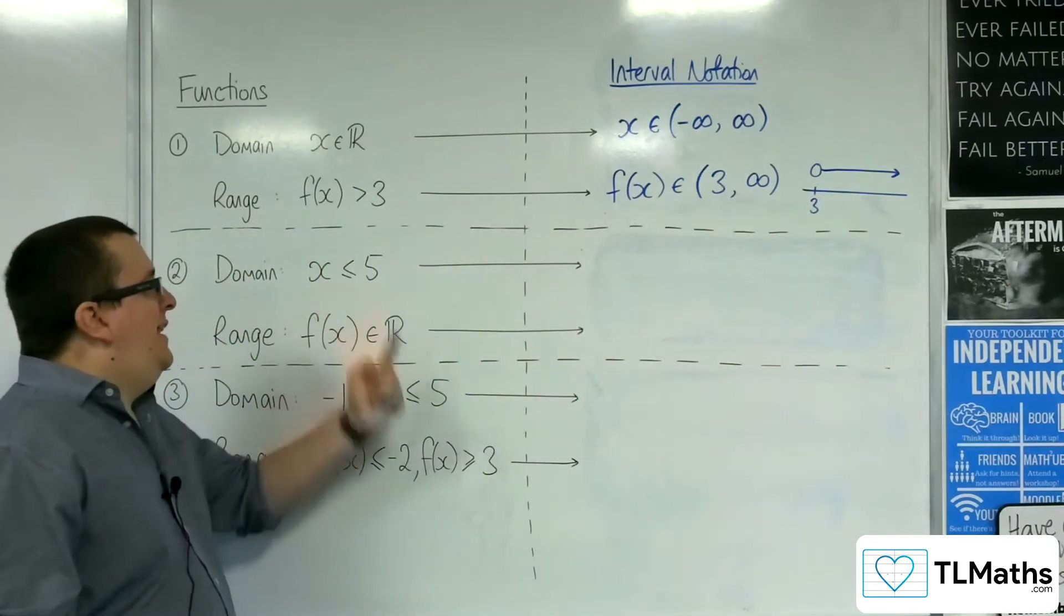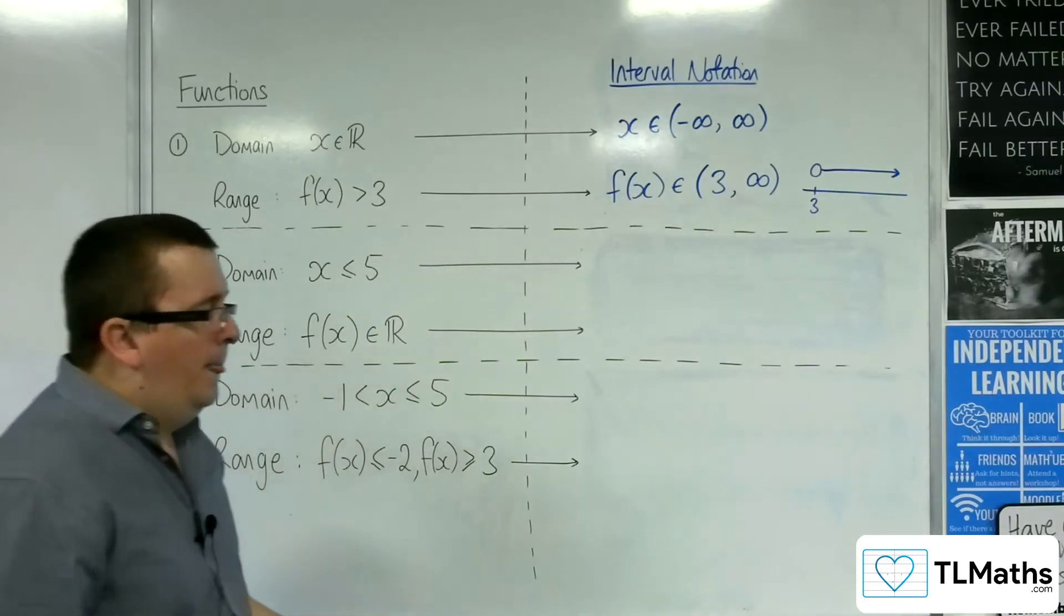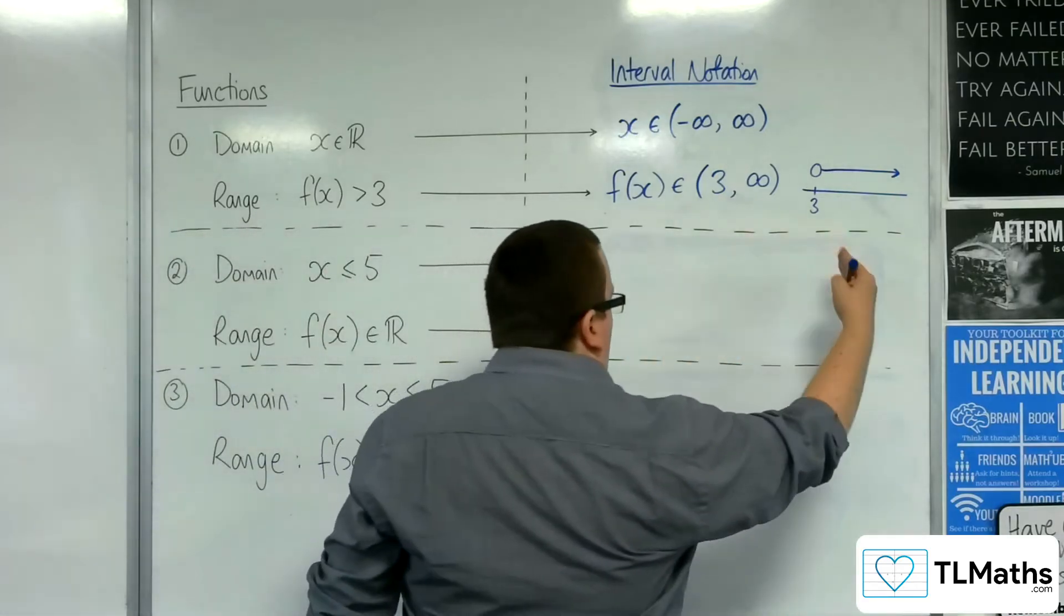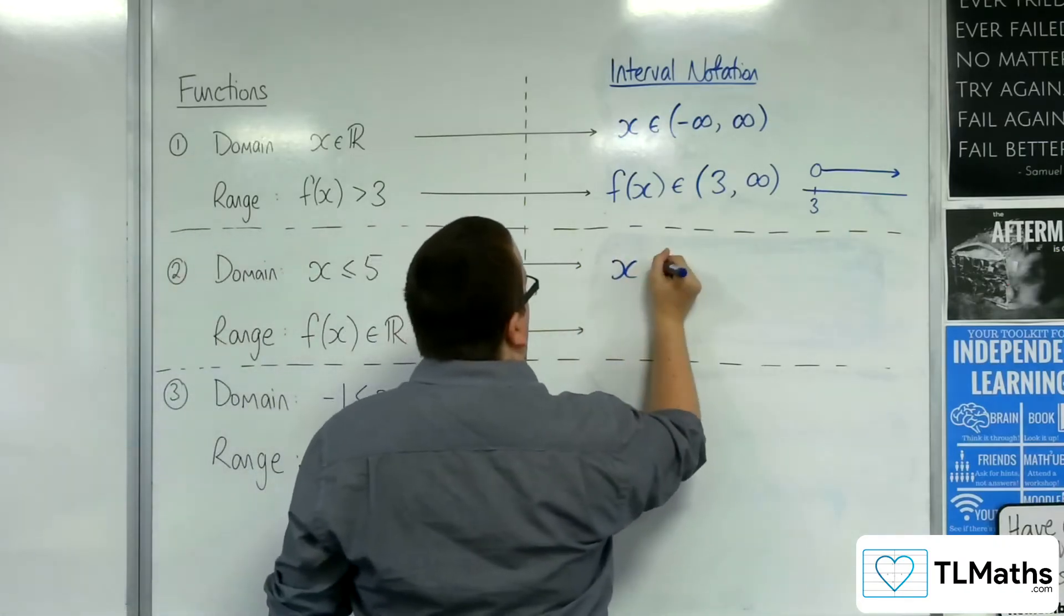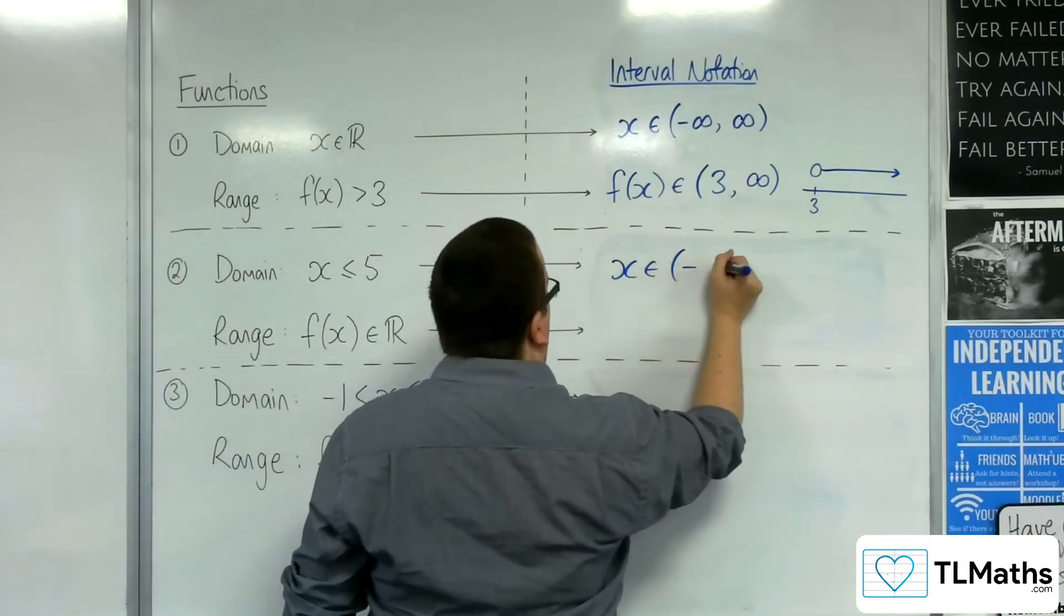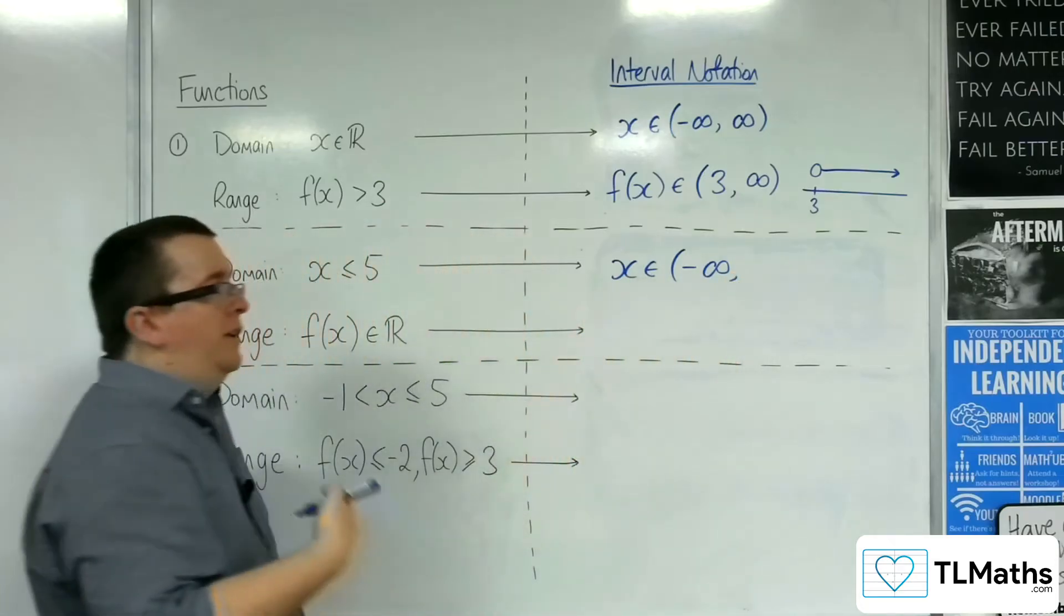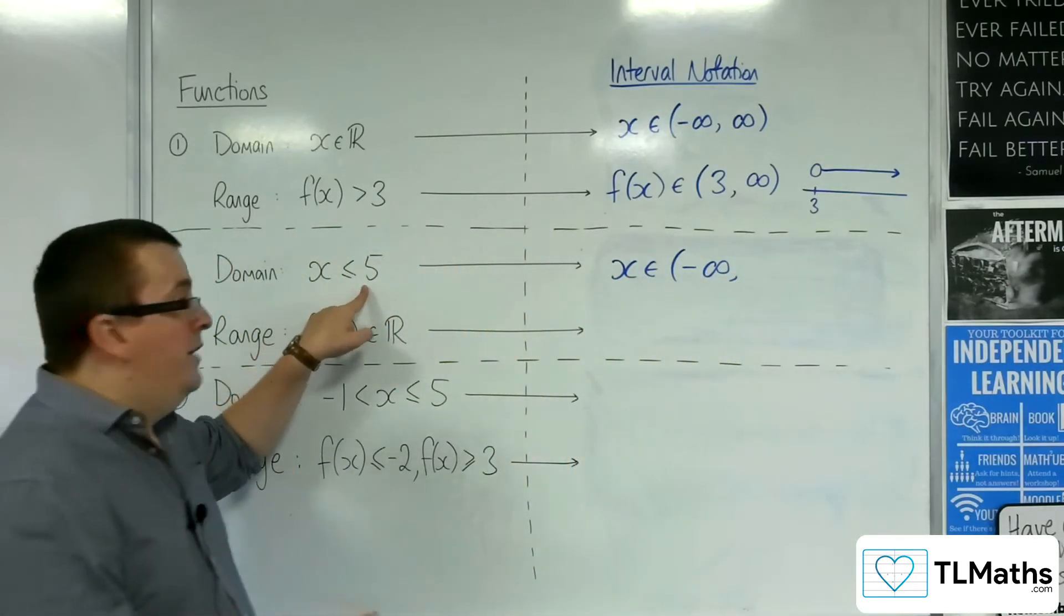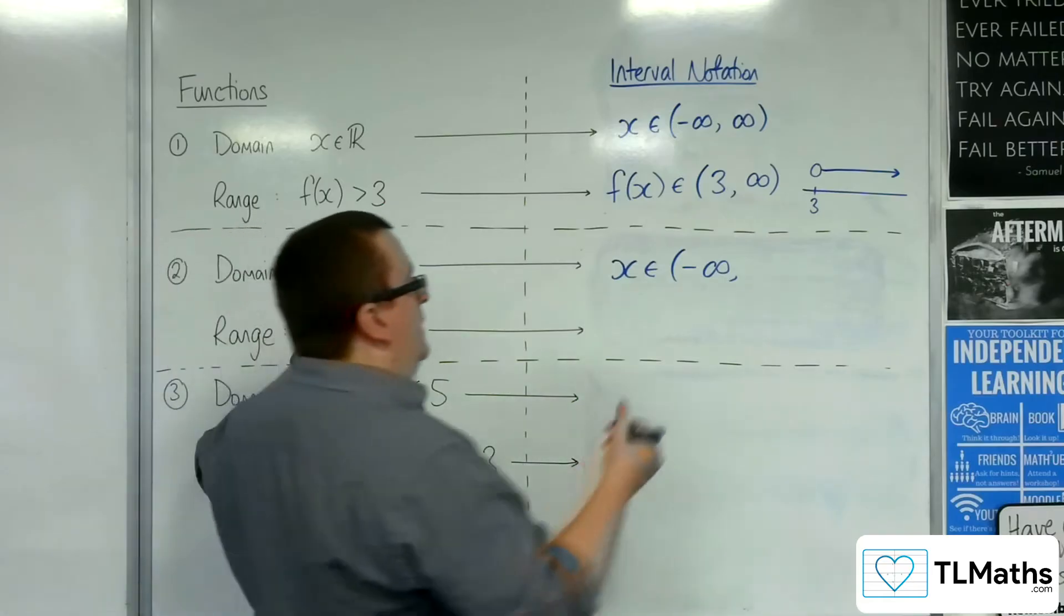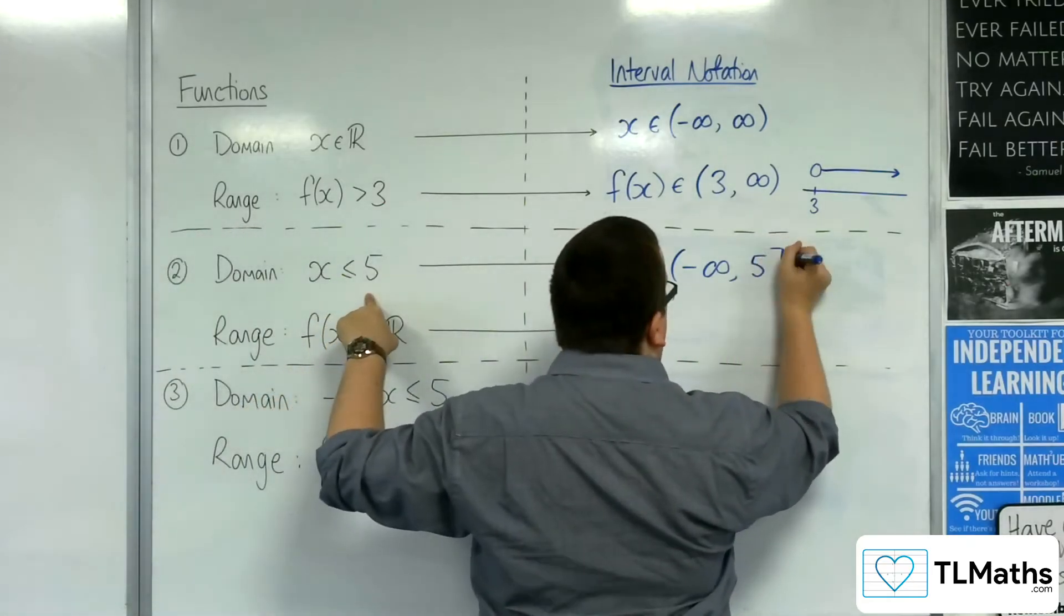Now, if x is less than or equal to 5, then on our number line, we'd be going from 5 down to negative infinity. So, I don't include negative infinity, so I used a curved bracket, but when I want to include 5, because 5 is included here, I use a square bracket.